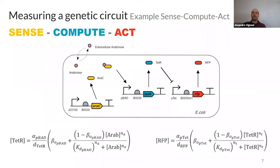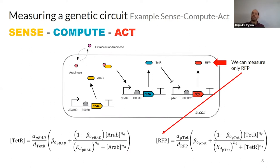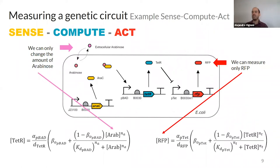So we have our circuit — what can we measure and what can we change? One of the things we can measure easily with a plate reader or flow cytometer is the fluorescence of the RFP. What we can change in the experiment is the amount of arabinose put in the media, which is the molecule this device was designed to sense.